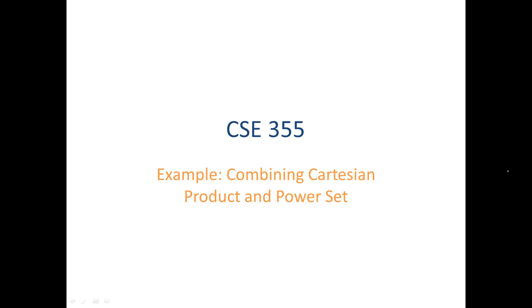Let's look at an example that combines a Cartesian product and power set. So let's let T be a set that has the elements 1 and 2, and U be a set that has the elements 3 and 4.